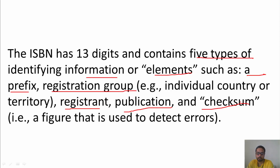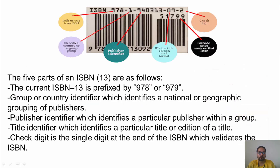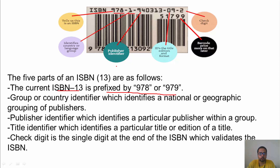ISBN is 13 digits and contains five elements: a prefix, a registration group, a registrant, a title obligation, and a checksum. As you can see in this example of an ISBN barcode found on any book: the first three numbers are the ISBN-13 prefix, followed by the group or country identifier, the publisher identifier, the title identifier, and finally the checksum used to verify the ISBN number.